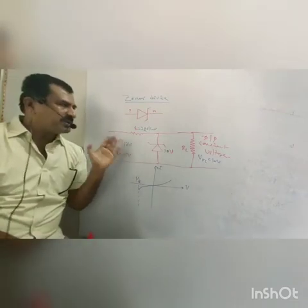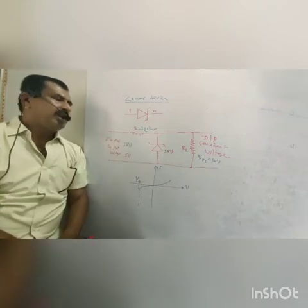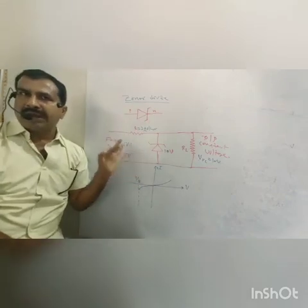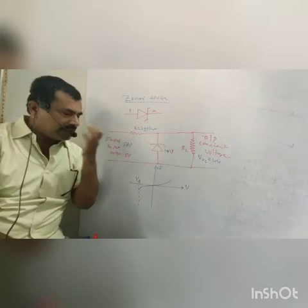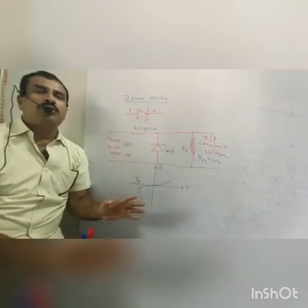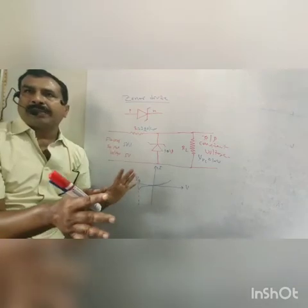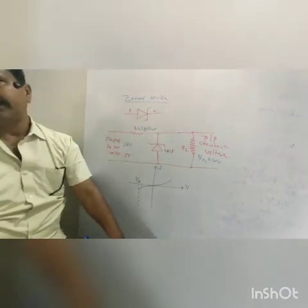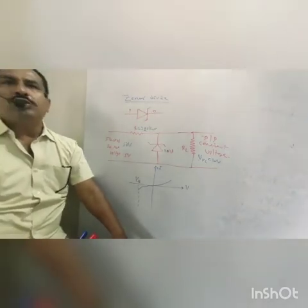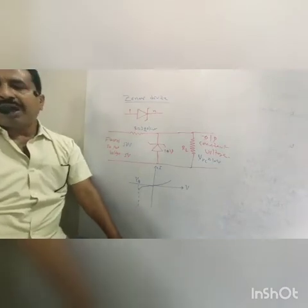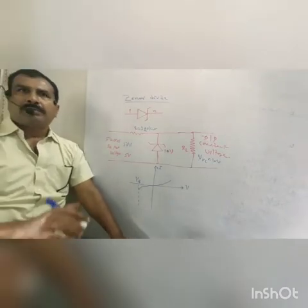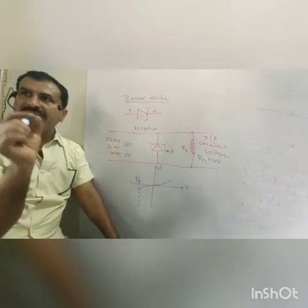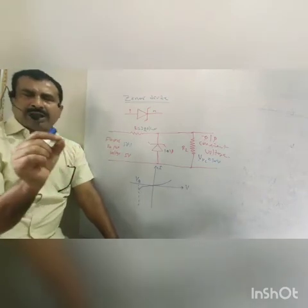This is the specially designed diode that works continuously in the breakdown voltage region. An ordinary diode in reverse bias — when the voltage is increased — reaches breakdown voltage due to minority charge carriers.